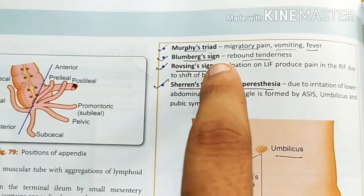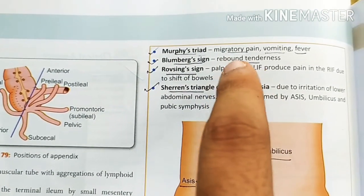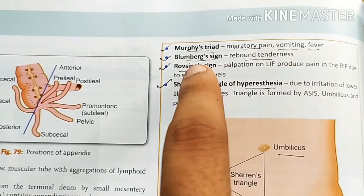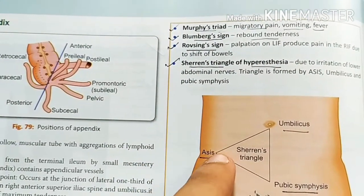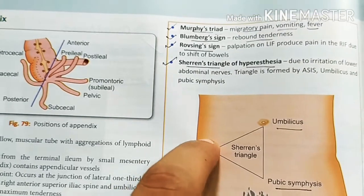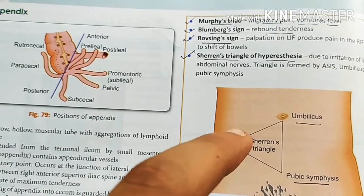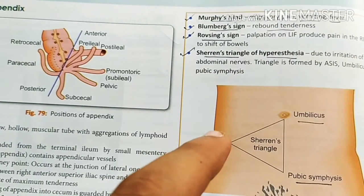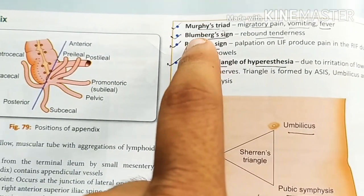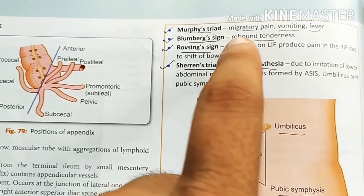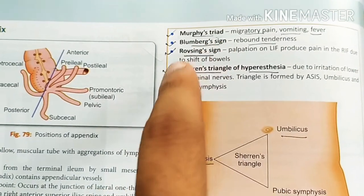Next is Bloomberg sign. Bloomberg sign means rebound tenderness. For example, suppose there is the appendix and you press the point — you will not feel pain. But when you release the finger, you feel the pain. This rebound pain is called Bloomberg sign.